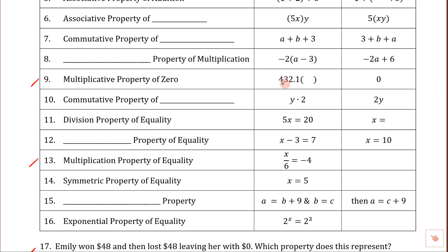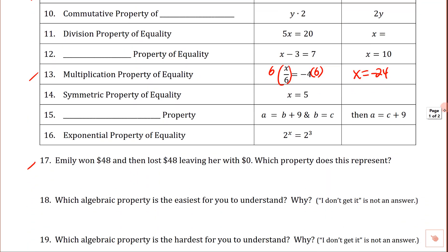Multiplicative property of zero: 432.1 times something equals zero — that's got to be zero. Next, using the multiplication property of equality: you'd normally cancel the two fractions and end up with x equals negative 24. The multiplication property of equality allowed us to do that. We're just looking at simple examples and trying to get these names down.